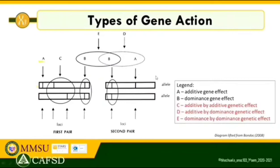We have here a diagrammatic representation of the various types of gene action at the chromosomal level, governing a polygenic trait. Based on the discussion of additive and non-additive gene action, alleles may interact with one another in a number of ways. These are the pairs of alleles. Alleles may interact in a number of ways to produce variability in the phenotypic expression.